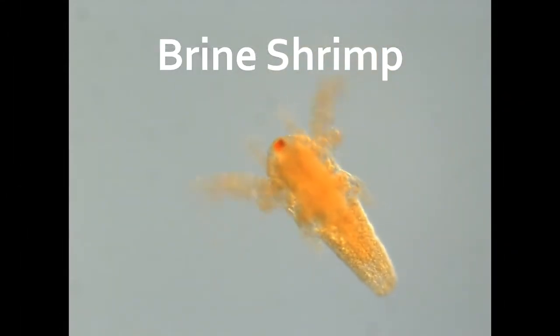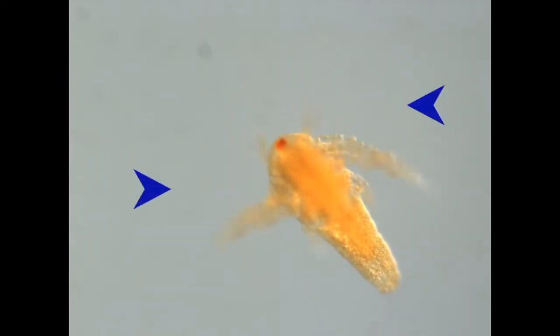This animal is known as a brown shrimp. They live in salty water. They have arms that they use to swim through the water. It looks like this guy is waving at us.